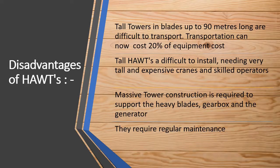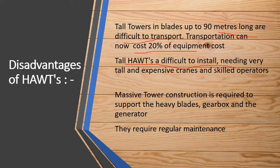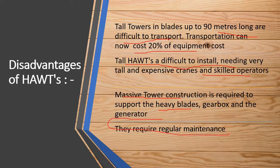Now the disadvantages of horizontal axis wind turbines. Tall towers and blades up to 90 meters long are difficult to transport, and transportation can cost up to 20% of the equipment cost. Tall horizontal axis wind turbines are difficult to install and require skilled operators; massive tower construction and heavy blades are required. They also require regular maintenance to work properly.